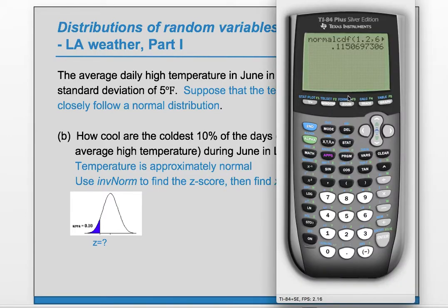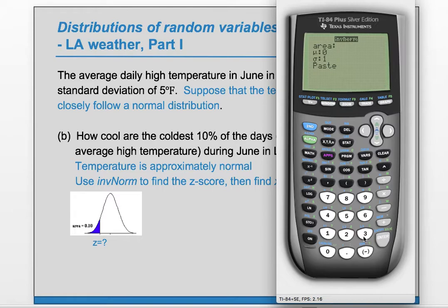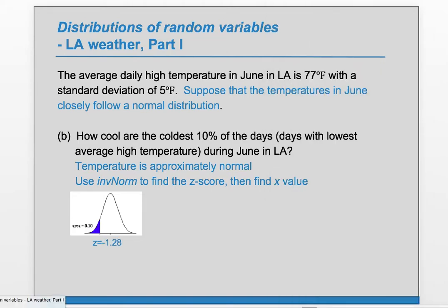We'll go back to our calculator and go to second VARS or second distribution and choose number three which is inverse norm. Here we must enter the percentile as a decimal — so instead of entering 10 we'll enter 0.1 — and this will give us the z-score. We're expecting it to be negative, and we get negative 1.28. Now using z equals x minus average over SD, we plug in the z of negative 1.28 as well as the average and SD, and solve for x. In this case x is 70.6 degrees Fahrenheit.